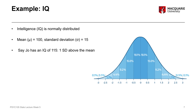Let's say we have one particular person called Joe, and Joe has an IQ of 115. Joe's IQ score is one standard deviation above the mean because it's 15 points above the mean of 100, and 15 points is our standard deviation. So by knowing Joe has an IQ of 115, we know that particular IQ score falls one standard deviation above the mean on our graph. We can therefore use that information to see what proportion of people have an IQ above Joe's and what proportion have an IQ below Joe's.